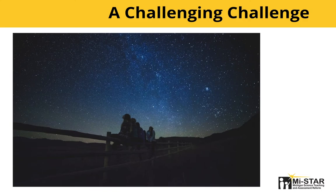Number one: it is hard to observe firsthand the motion of objects in our solar system. You've certainly noticed that when we look into the night sky, most objects like the moon, planets, and stars look like they aren't moving at all.